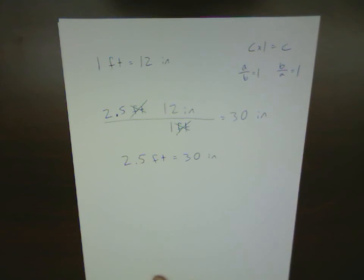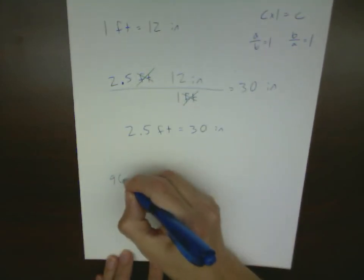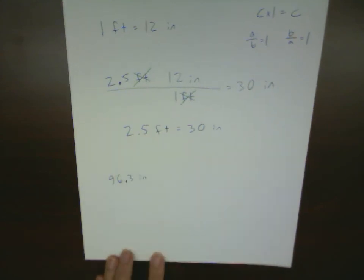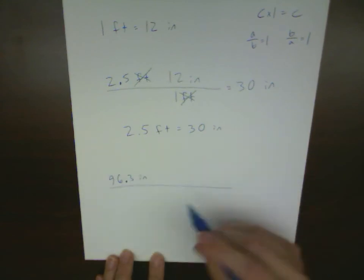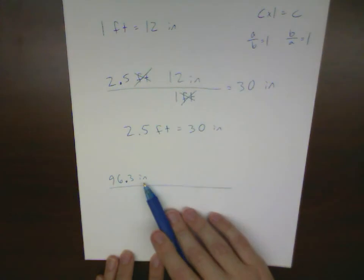Now, we could do this in reverse. Maybe I've got something like 96.3 inches and I want to find out what that is in feet. So again, I've got to put the part of my conversion factor that matches my known units on the bottom.